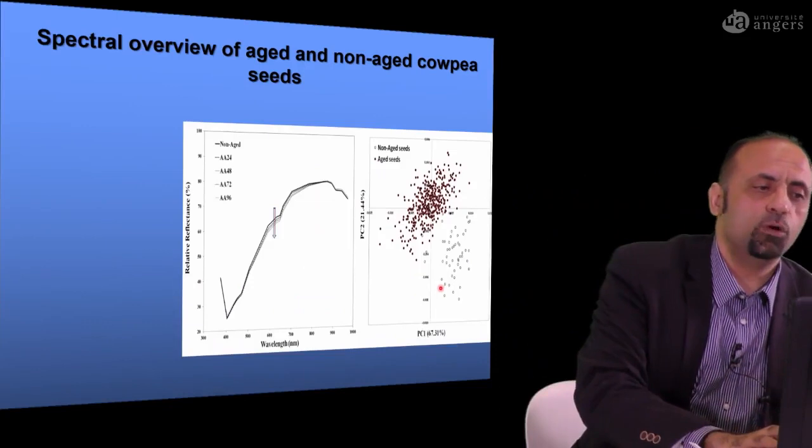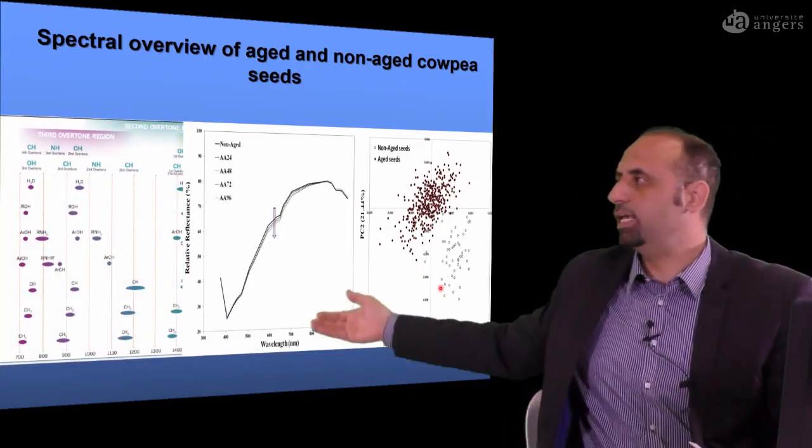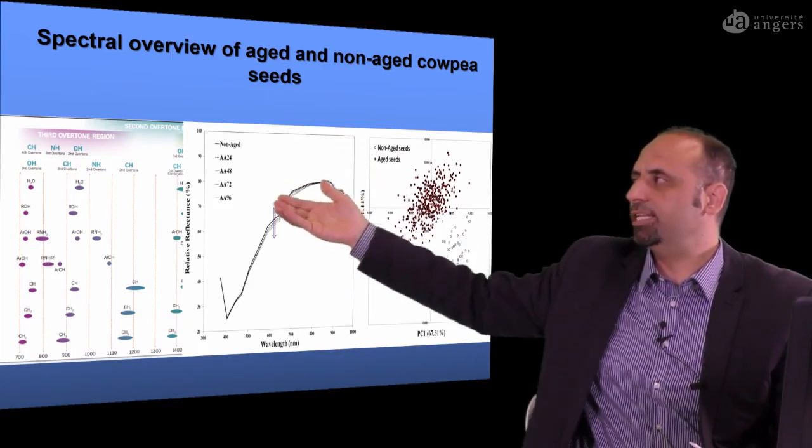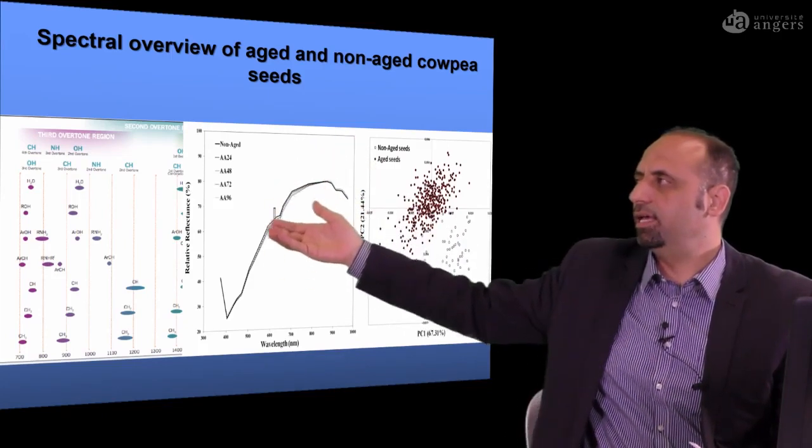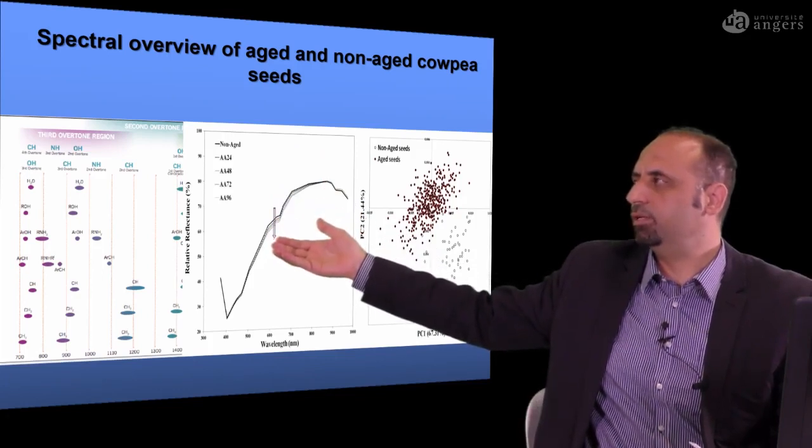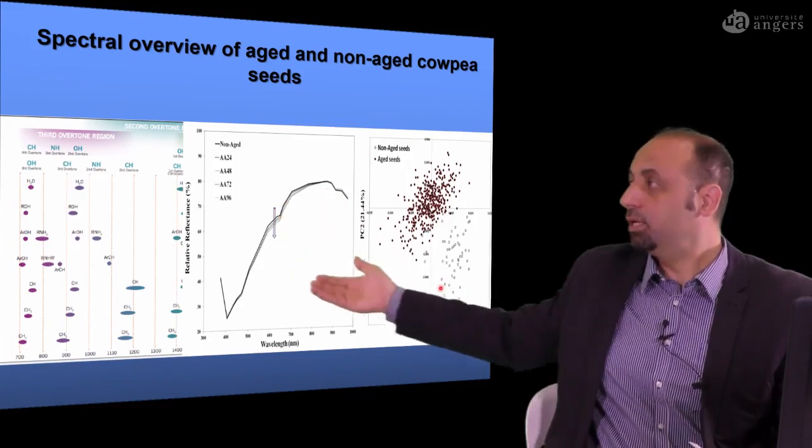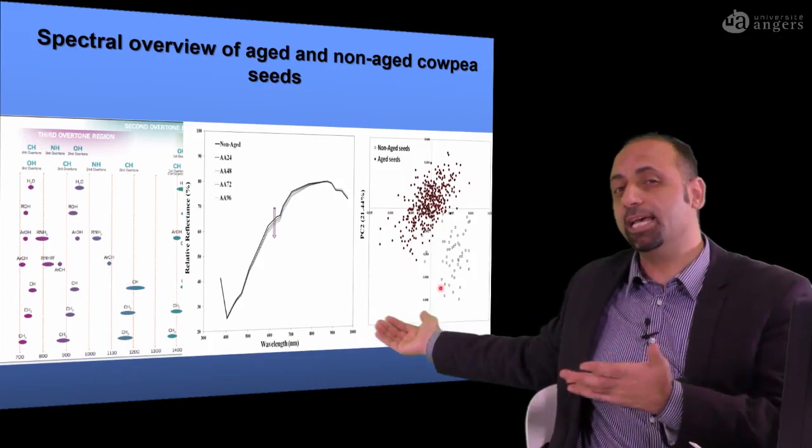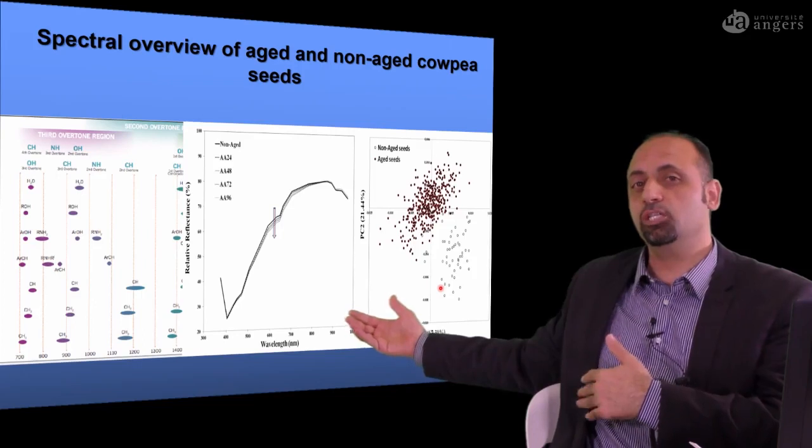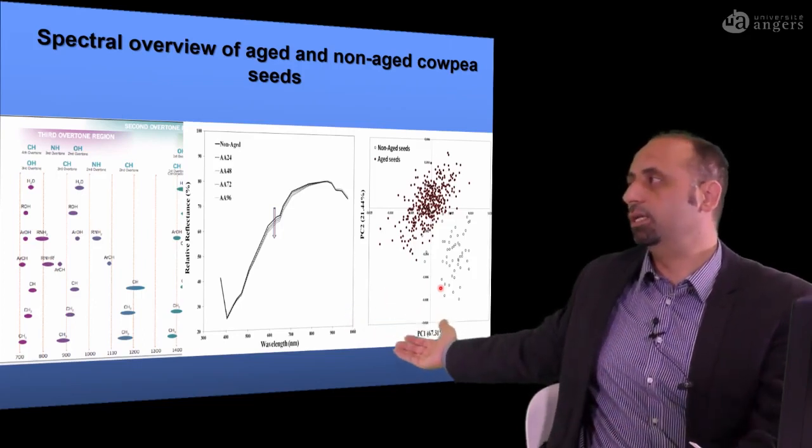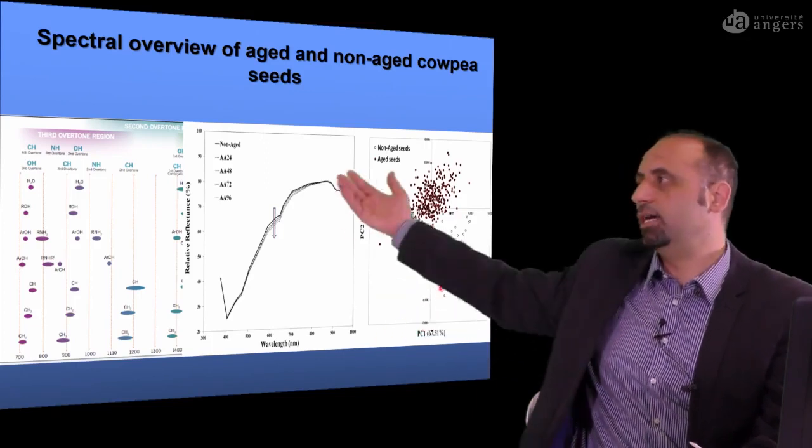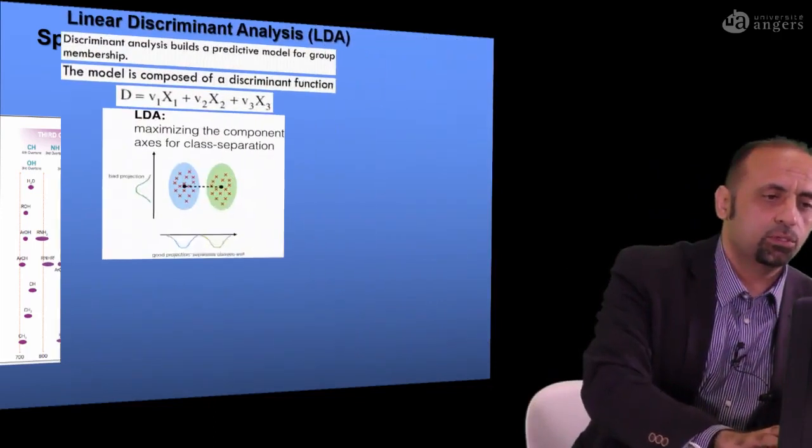This is the overall data that we have from different seeds. As you see here, there is a difference between the non-aged and the aged seeds. And as you see here, the arrow indicated here is the spectral signature of the seeds coming from up to down. If you need to get an idea about how the spectral data is different from seed to seed or from aging period, from period to period, as you see here, if you carry out principal component analysis, you can differentiate between aged seed and non-aged seeds.